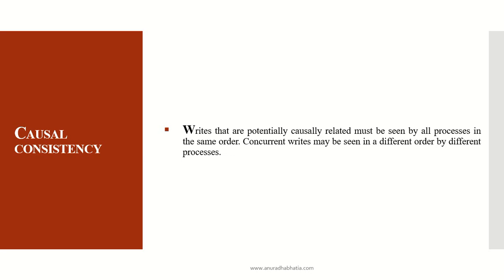Causal consistency requires that writes that are potentially causally related must be seen by all processes in the same order — when writing data, all processes should see it in the same order at the same timestamp. However, concurrent writes may be seen in different orders by different processes, but only when those processes are truly concurrent.